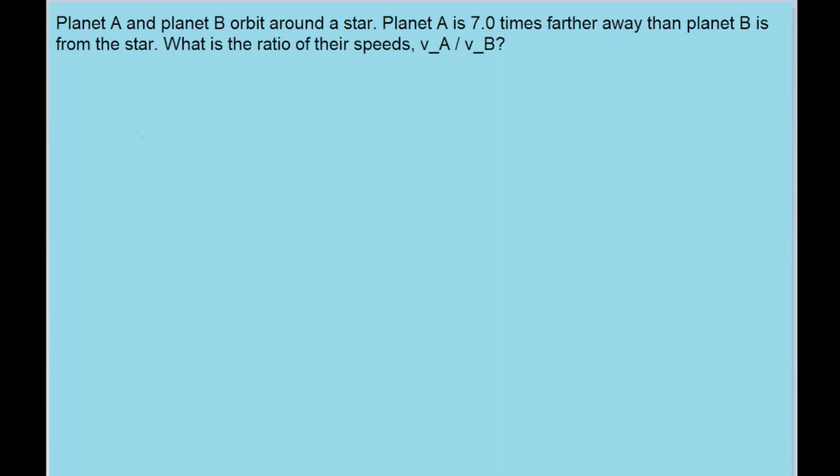In this problem, we have two different planets that are different distances away from a star, and we want to find a ratio for their speeds based on those distances.